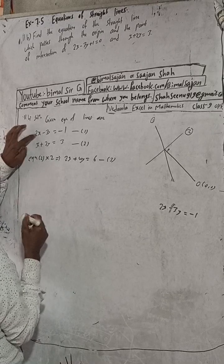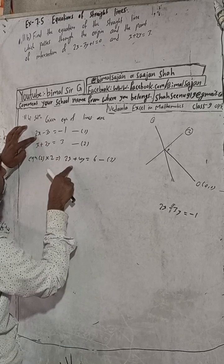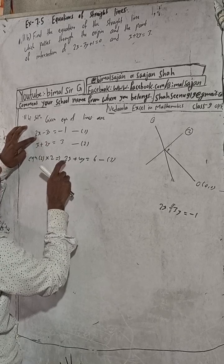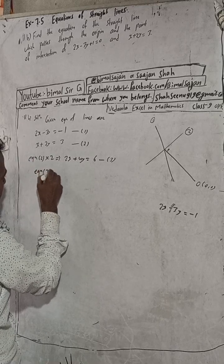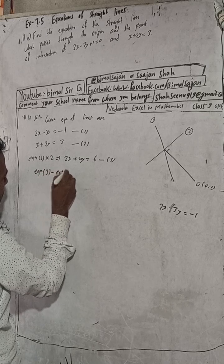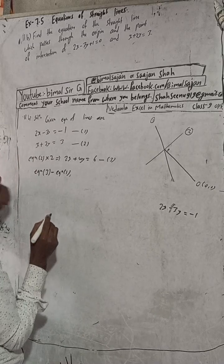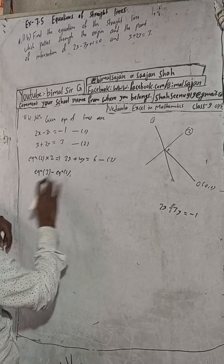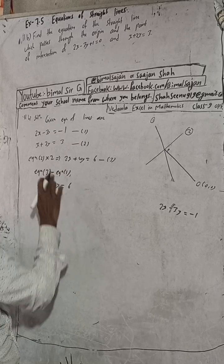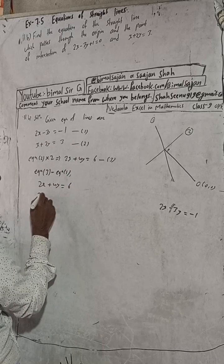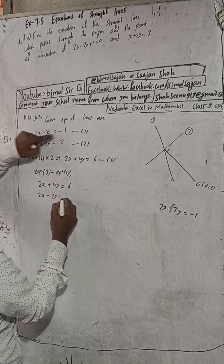Now, see that equation 1 and equation 3 both have coefficient 2 for x — they are the same. Now when you subtract equation 1 from equation 3: equation 3 is 2x + 4y = 6, minus equation 1 which is 2x - 3y = -1.